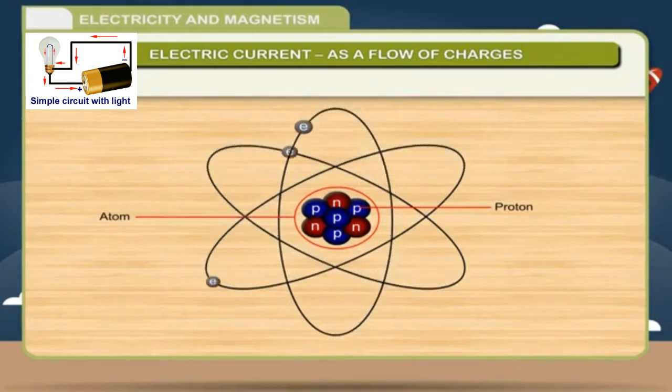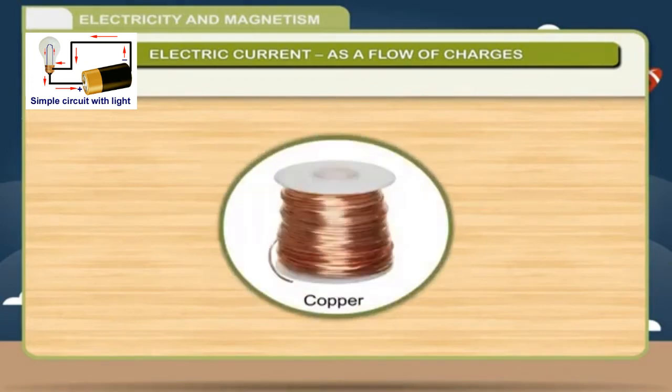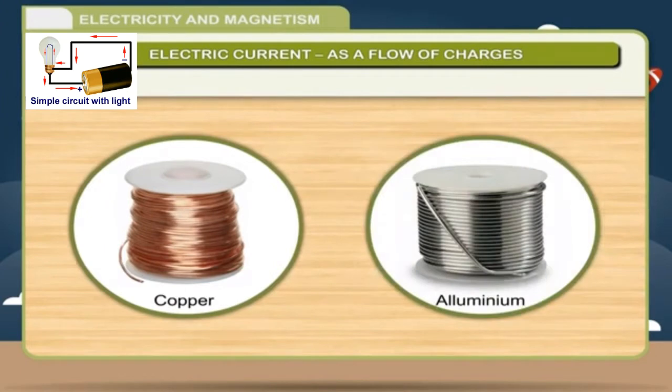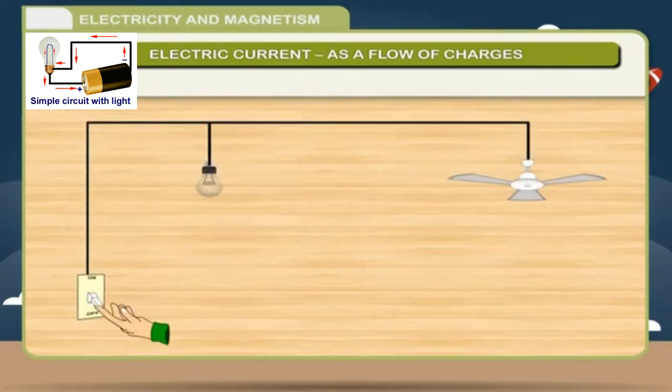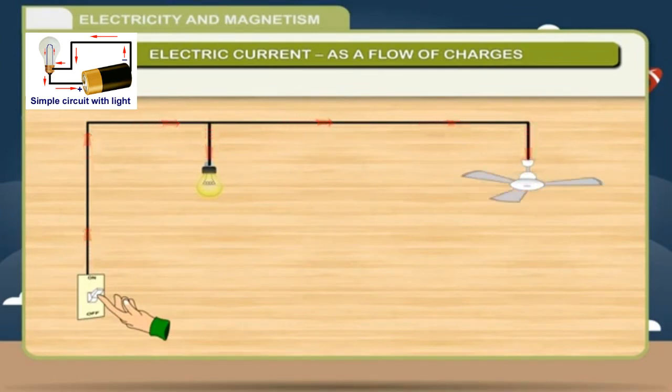The free electrons of a good conductor such as copper and aluminium start flowing in one direction when connected to a source of electricity. For example, when we switch on the bulb and fan, the electricity flowing through the wires is actually the flow of electrons. This flow of electrons, electric charges, through a conductor is known as electric current.